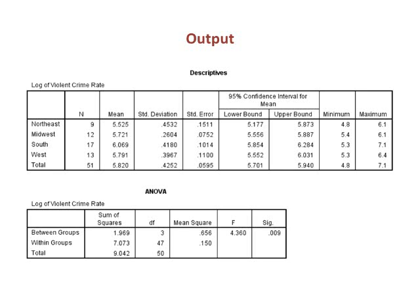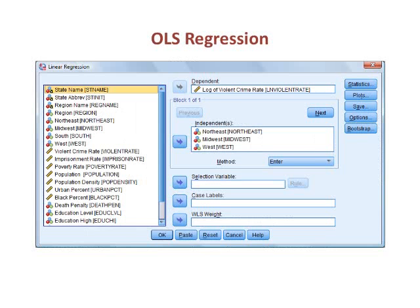I will start with the example from the one-way ANOVA video. In that video, we established that the log of the violent crime rate varies by region of the country. In OLS regression, I use dummy variables for each region,